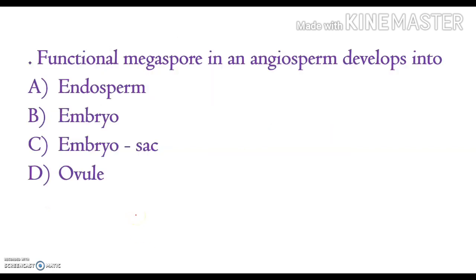The functional megaspore in an angiosperm develops into: endosperm, embryo, embryo sac, or ovule. The correct answer is option C, the embryo sac.